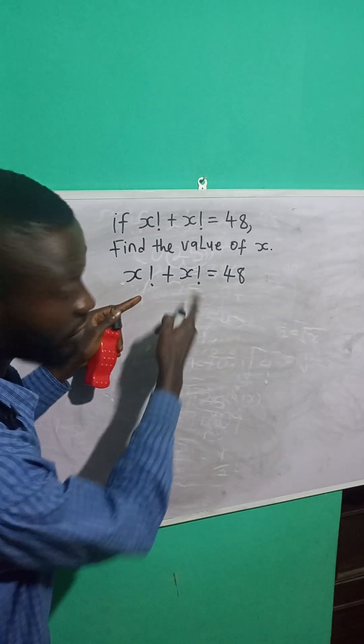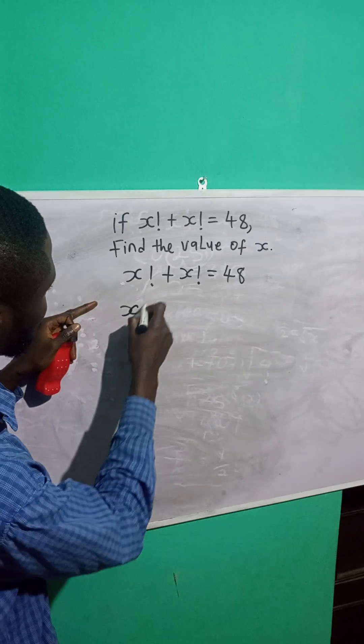Now, what is common here? x factorial is common here. So I'll factor it out. So x factorial.